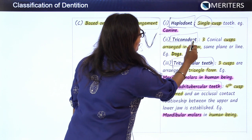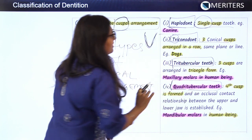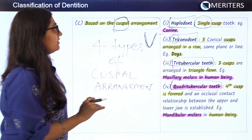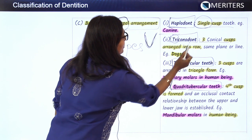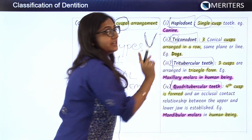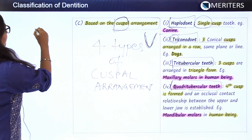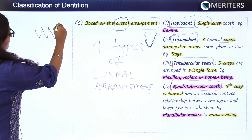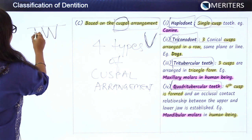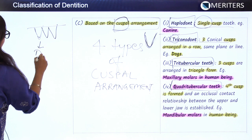Triconodont — tri itself means three — so three conical cusps. There are two similar terminologies to differentiate: triconodont and tritubercular teeth. In triconodont, the three conical cusps are arranged in a single row. Such teeth are found in dogs.